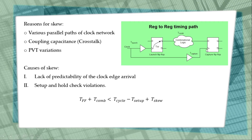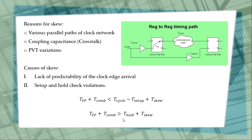Positive skew helps setup time but hurts hold time, because hold time gives a minimum limit on propagation delay: T_flip-flop plus T_combinational must be greater than T_hold. When positive skew is added, the minimum required propagation delay increases, which is a problem. As opposite to setup time, for hold time, positive skew is bad and negative skew is good.